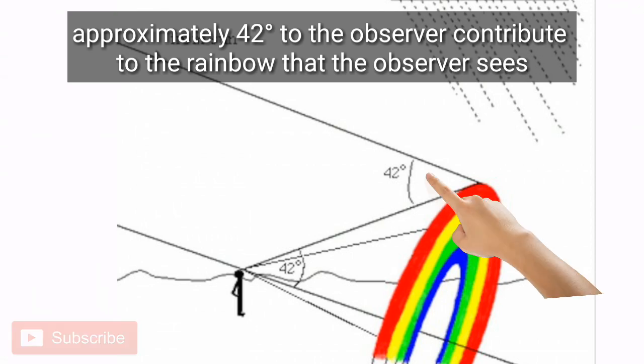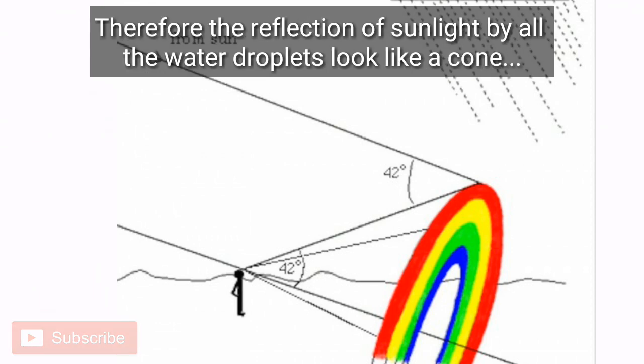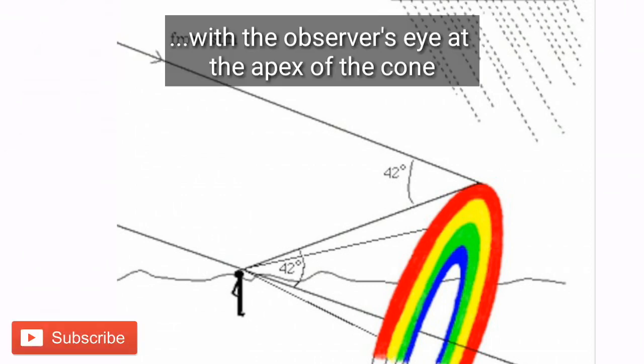The water droplets that produce the rainbow actually form an arc. Therefore, the reflection of sunlight by all the water droplets looks like a cone with the observer's eye at the apex of the cone.